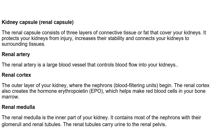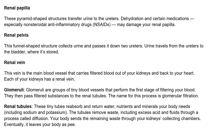The renal tubules carry urine to the renal pelvis. You have the renal papilla, which transfers urine to the ureters and is pyramid-shaped. This can be damaged by dehydration and certain medications such as non-steroidal anti-inflammatory drugs. The renal pelvis is funnel-shaped, collects urine and passes it down the two ureters. Urine travels from the ureters to the bladder where it is stored. You have the renal vein, the main blood vessel that carries filtered blood out of your kidneys and back to your heart, and each kidney has one.